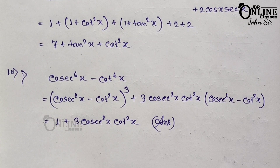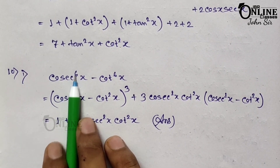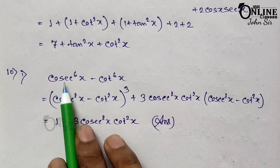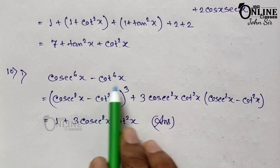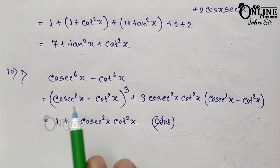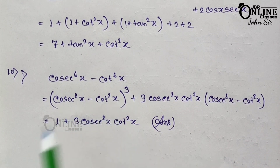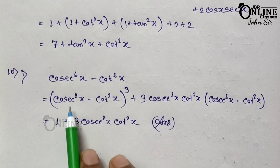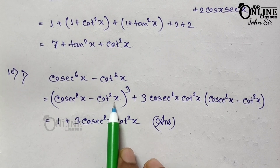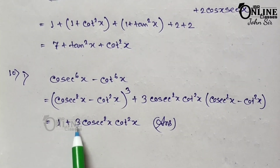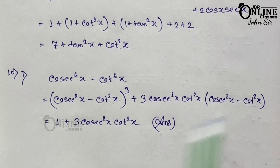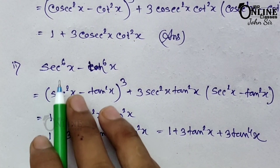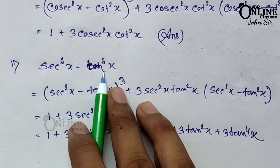Sum number 10.1: cosec⁶x − cot⁶x. Write as (cosec²x)³ − (cot²x)³ and apply a³ − b³ = (a−b)³ + 3ab(a−b). Since cosec²x − cot²x = 1, we get 1³ + 3·cosec²x·cot²x·1 = 1 + 3cosec²x·cot²x, proved.